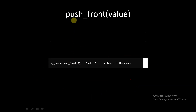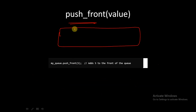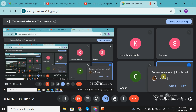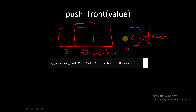We also have the method push_front() for pushing an element into the queue from the front. For example, if this is our queue my_queue with indexes 0, 1, 2, 3, the front is at index 0. If you use the built-in function push_front(5), the element 5 will be inserted at the front of the queue.